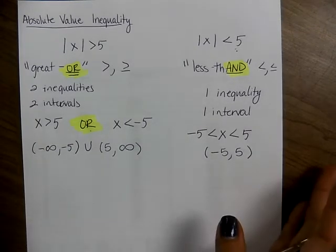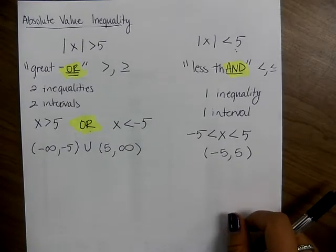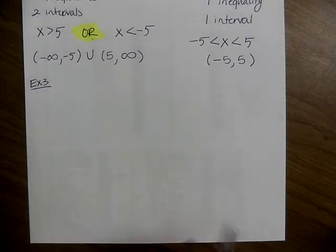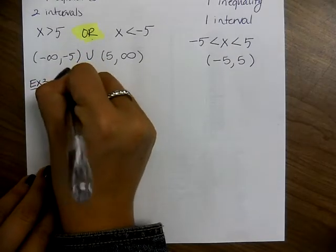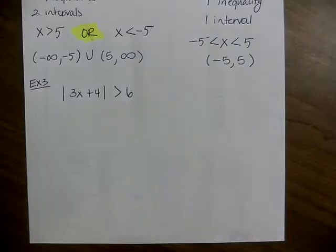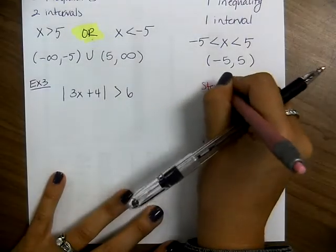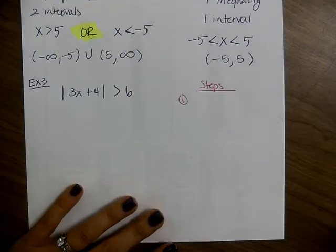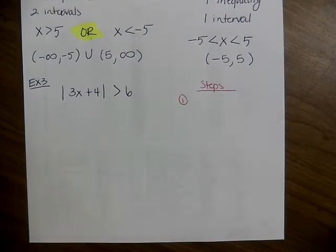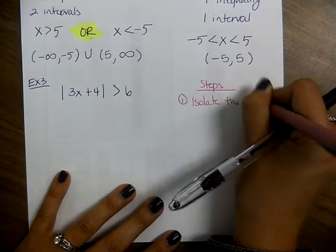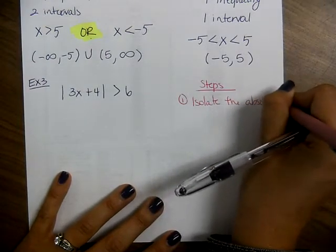You have to remember these rules when setting up your inequality to solve. Let's do example 3: the absolute value of 3x plus 4 is greater than 6. Step 1, regardless of whatever the sign is, you have to isolate the absolute value. This was also true of an absolute value equation — before you can do anything, the absolute value has to be all by itself.